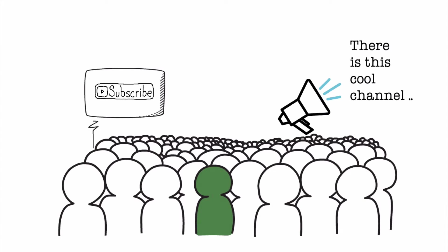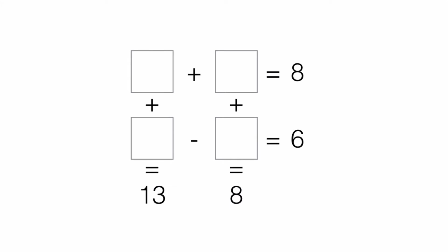So today's problem involves finding four unknowns. Here's the problem. In this figure we have four result values: 13, 8, another 8, and 6. And we have four unknowns: A, B, C, and D.